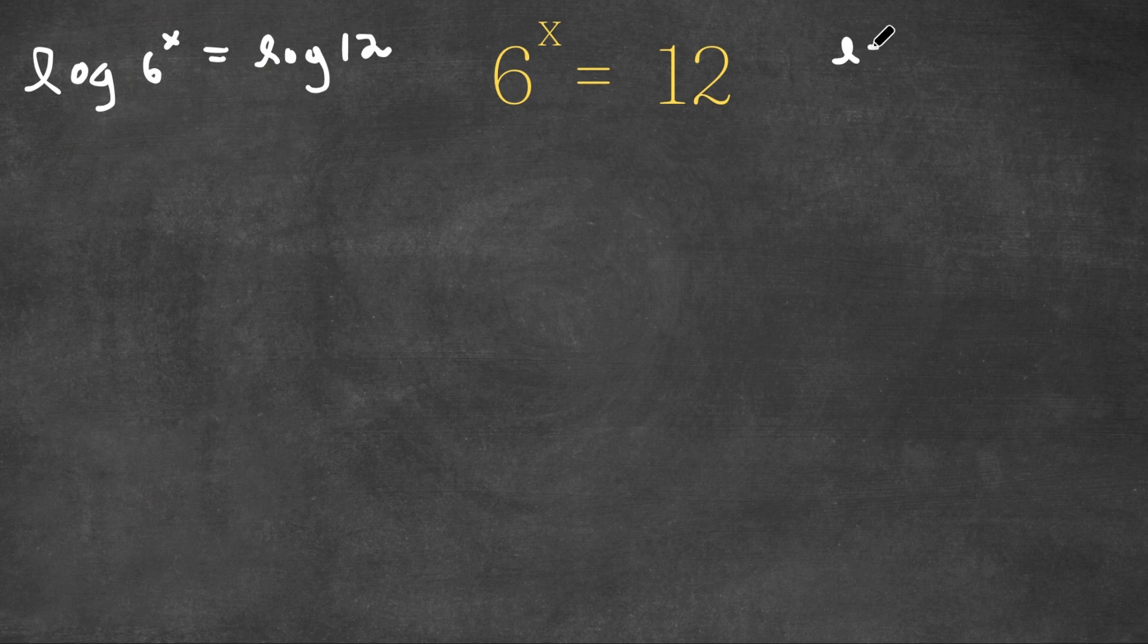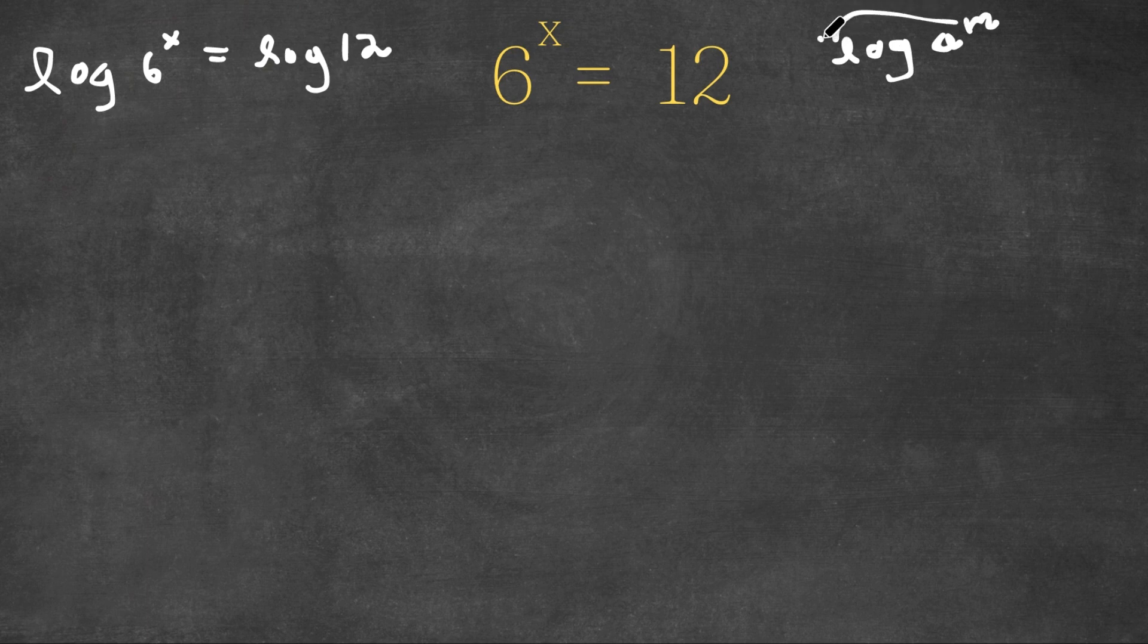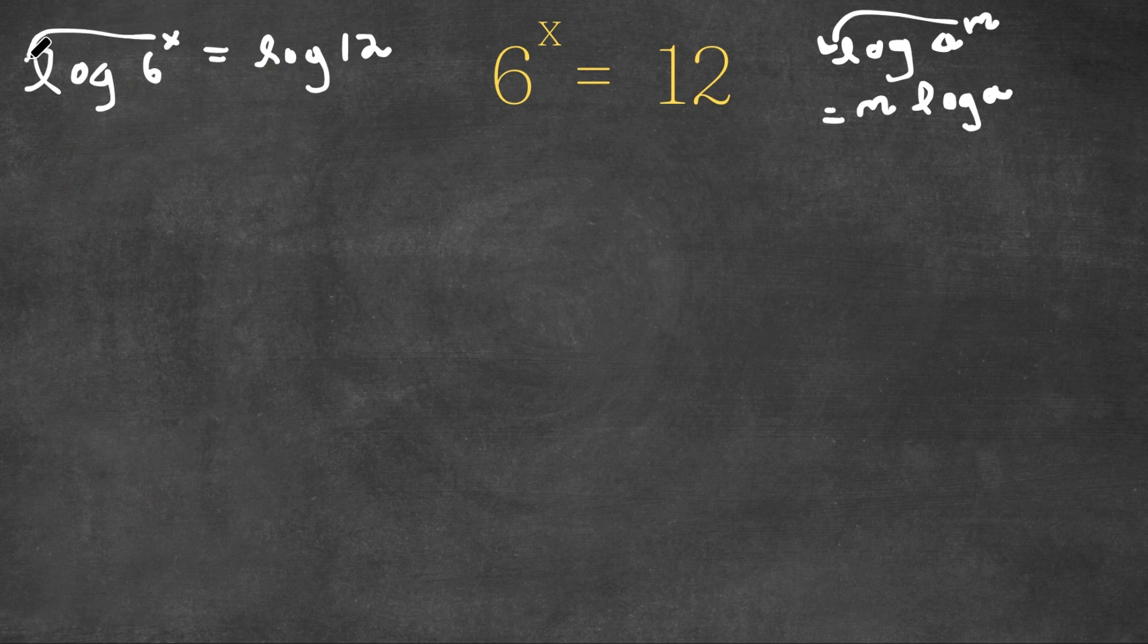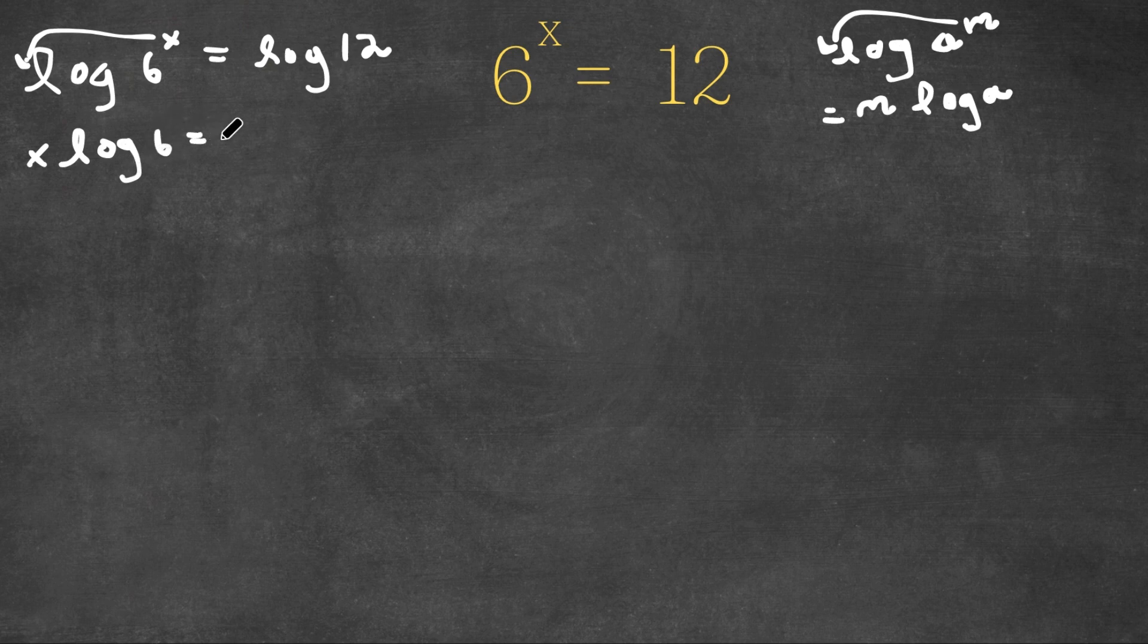Now, if we have a logarithm in the form log a to the power of m, using the power property of logarithms, we can actually move this exponent to the front of the logarithm. So this would equal m times log a. So as you can see here, we have log 6 to the power of x. We can actually move this exponent x to the front of the logarithm. So this would be x times log 6 is equal to log 12.